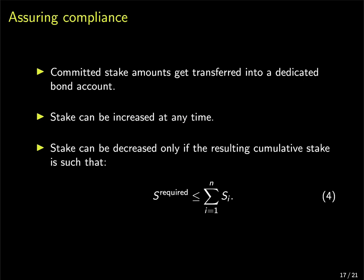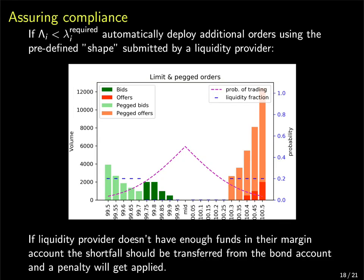The amounts staked by liquidity providers get moved to a dedicated bond account which cannot be accessed by them at will. They can always increase the stake if they wish to do so, but they can only decrease it if doing so would still leave enough liquidity in the market. While liquidity providers can fulfill their commitment by manually managing their orders, we also ask them to submit what we call an order shape along with their liquidity transaction. It is a predefined set of pegged orders with relative weightings which get deployed if the liquidity provided by the other orders is not enough to cover the commitment. Here you can see the probability of trading implied by the risk model — it decays as we move away from the mid, hence the volume for each of the orders gets higher as they are further away from the mid. If at any point the liquidity provider's margin account balance is too low to cover their orders, we use the money in their bond account to make up the shortfall. We also apply a small penalty and move it to the market's insurance pool to discourage relying on that kind of funding.